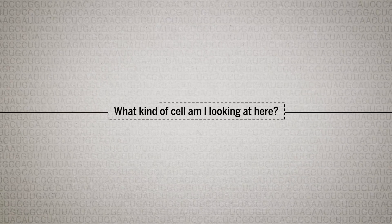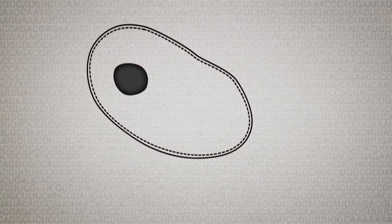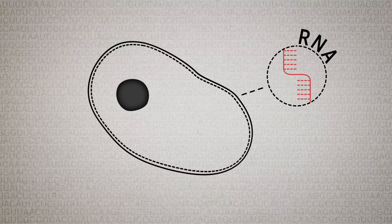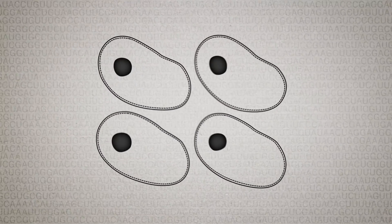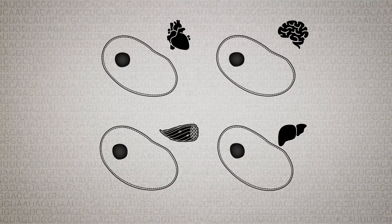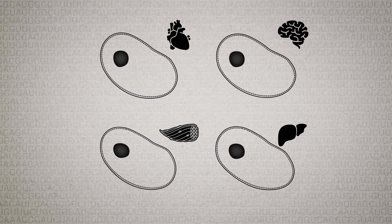What kind of cell am I looking at here? To find out, the researchers sequenced each cell's messenger RNA, which reflects active genes. Each cell type has a profile, a set of active genes that define its identity as a muscle cell or a type of brain cell.